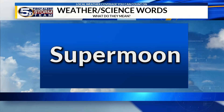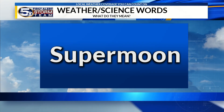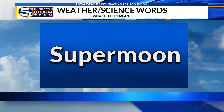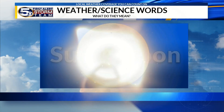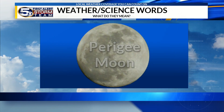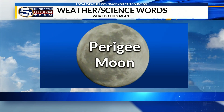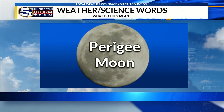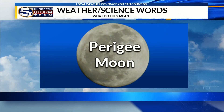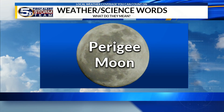Supermoon — we hear this pretty frequently now. Again, it's a scientific word known as perigee moon that people now call supermoon. It's really not super — it's a little bigger, it's a little brighter, but it comes around every so often.